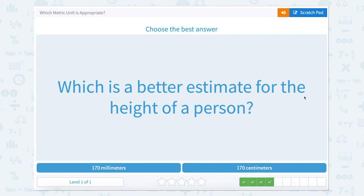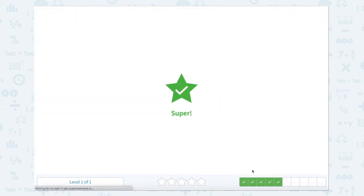What is the better estimate for the height of a person? Well, millimeters is much smaller than centimeters. So centimeters are even still pretty small, but would you rather measure a person in 170 millimeters? That means that it's super tiny. This person would probably be the size of a fairy. 170 centimeters sounds more like the height of a person.